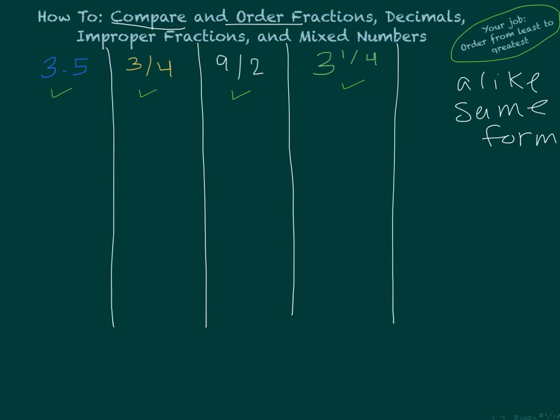So, 3 and 5 tenths, if you say that number out loud and we're going to change to a fraction, you might write 3 and 5 tenths, or you might also recognize that 5 is half of 10, so you could also write 3 and 1 half. You might also be able to recognize that just by looking at 3.5 or 3 and 5 tenths, that's 3 and a half. So that's in a mixed number. Next one, 3 fourths. Already in a fraction, we dig it, we're just going to leave it alone.